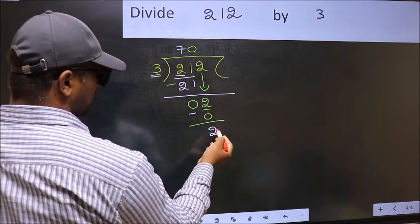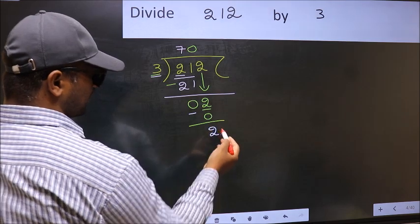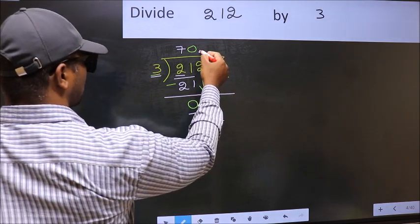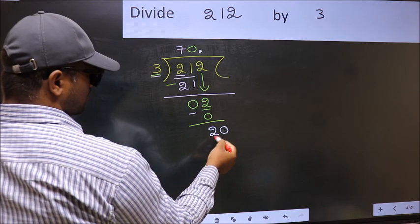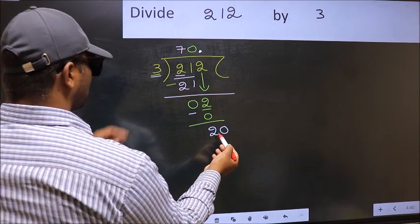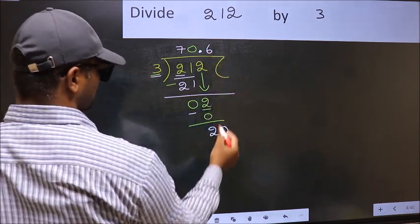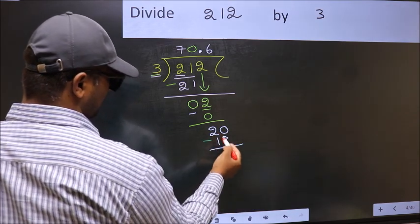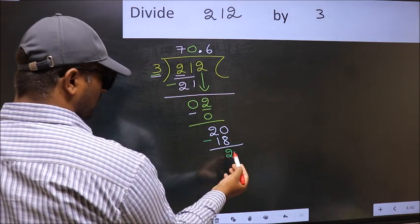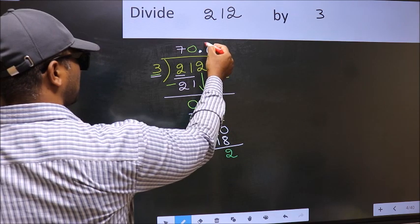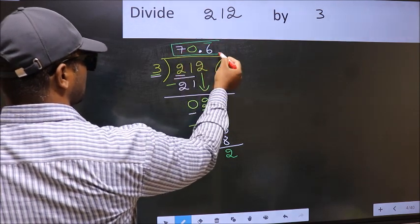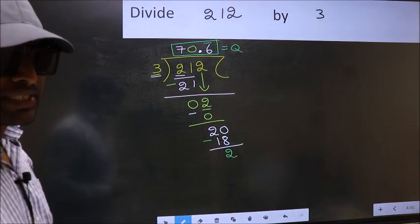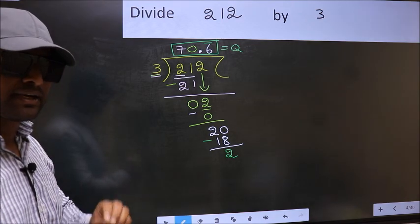Over here, we did not bring any number down, and 2 is smaller than 3. So now we can put a dot and take 0, making it 20. A number close to 20 in the 3 table is 3 times 6, which is 18. Now subtract: 20 minus 18 is 2. We got 2 again, which means we get a bar on this number. So this is our quotient. Did you understand where the mistake happens? You should not make that mistake.